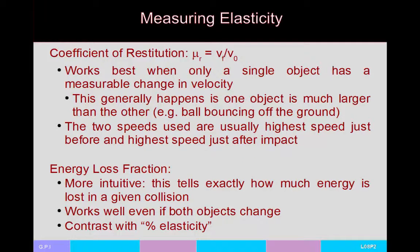There are various ways to measure how elastic or inelastic a collision is. The most common is the coefficient of restitution — the ratio of the final speed after collision versus the initial speed before the collision. The simplest case is a small object bouncing off a large one, like a ball bouncing off the ground: the coefficient is the ball's speed leaving the ground divided by its speed right before hitting.